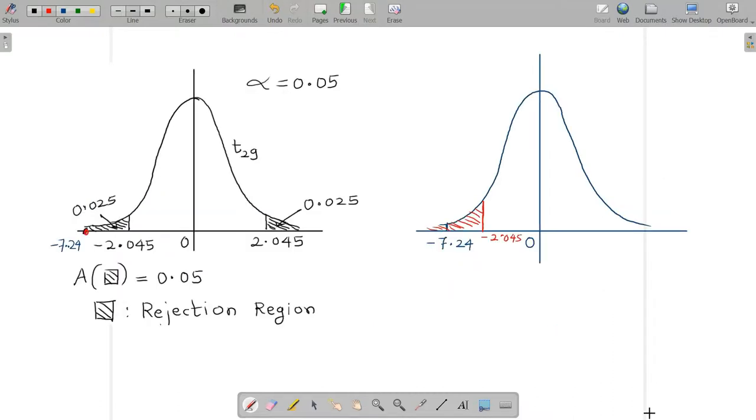Let's now see how these two methods, namely the rejection region approach and the p-value approach, are related to each other. In the rejection region approach, we first of all find the rejection region, and after finding it, we locate the test statistic.